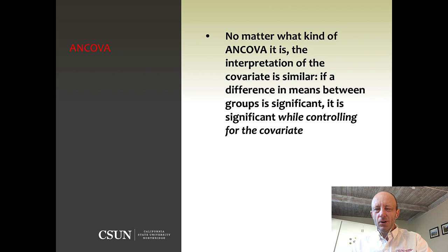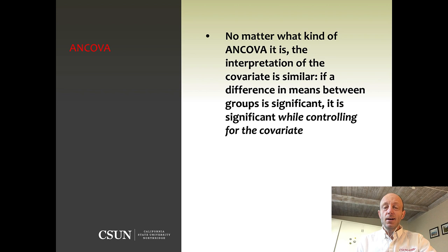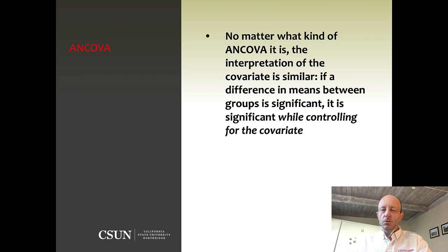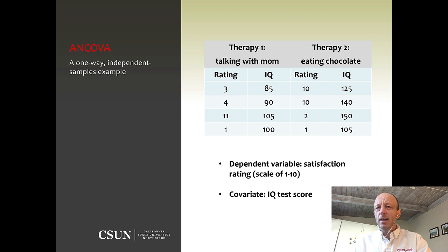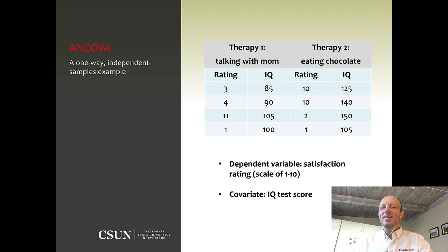No matter the scenario — we could have dependent samples instead of independent samples, more than one independent variable, or a two-way ANOVA turning into a two-way ANCOVA — in each case you could have a covariate. The typical terminology is 'controlling for.' You state the ANOVA hypothesis the same way as you would for an ANOVA, and then add at the end 'while controlling for the covariate.' In this case, I've added in an IQ variable. Each person in our data set underwent one of the two therapy types and then took an IQ test.